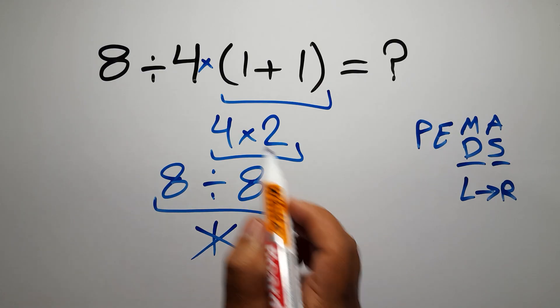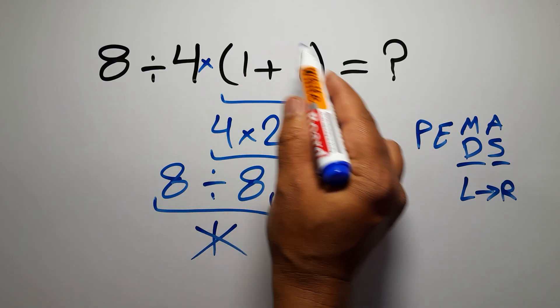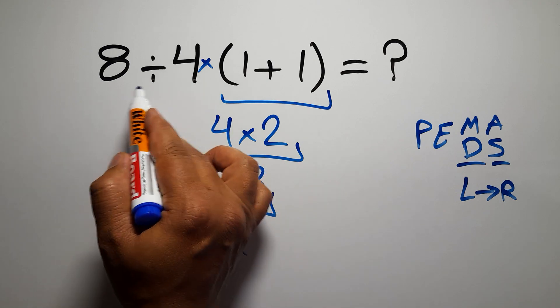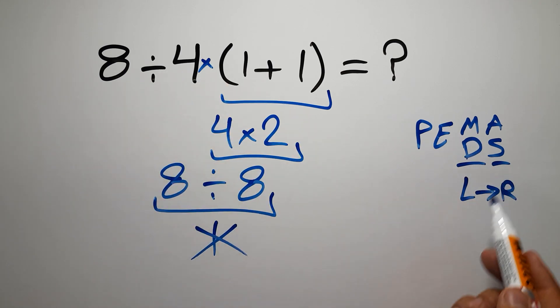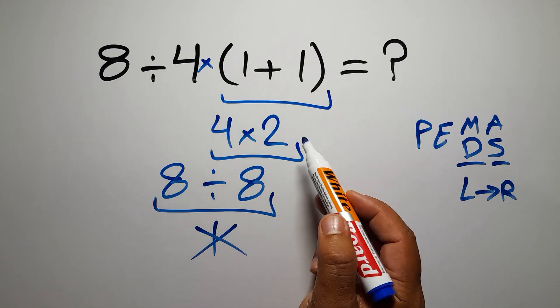First we have to do this parentheses, and after this parentheses, we have one division and one multiplication. As I said, multiplication and division have equal priority, and we have to work from left to right. So after this parentheses,